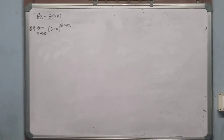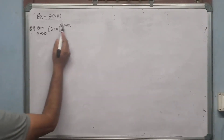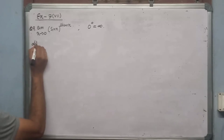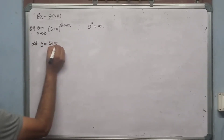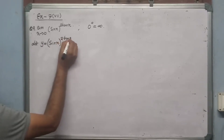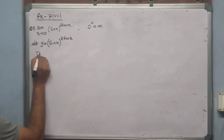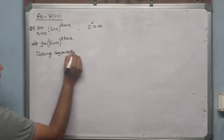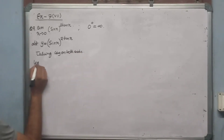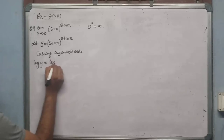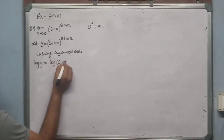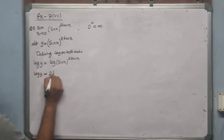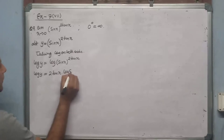The next question: limit x tends to 0 of (sin x)^(2tan x). Since sin 0 = 0 and tan 0 = 0, this is again 0 to the power 0 — undefined. This is a trigonometric function to the power of a trigonometric function. Let y = (sin x)^(2tan x), then taking log on both sides gives log y = 2tan x·log(sin x).